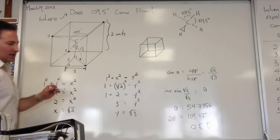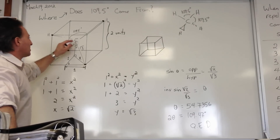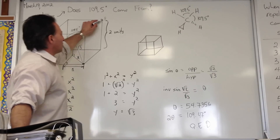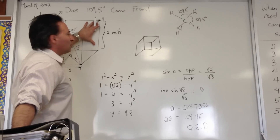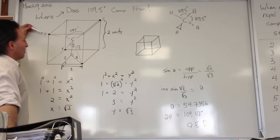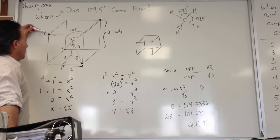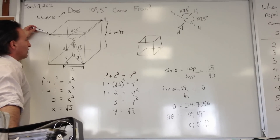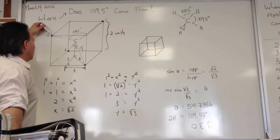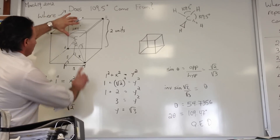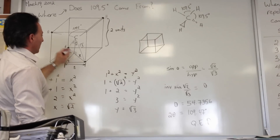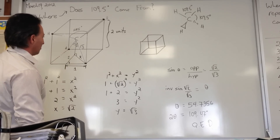Draw a methane molecule with the carbon atom's center at the center of this cube, and we'll assume the cube is two units high. The hydrogen atoms are going to be at opposite diagonals — on the top plane, a hydrogen atom at opposite diagonals, and if you rotate, hydrogen atoms at the opposite diagonals on the bottom.